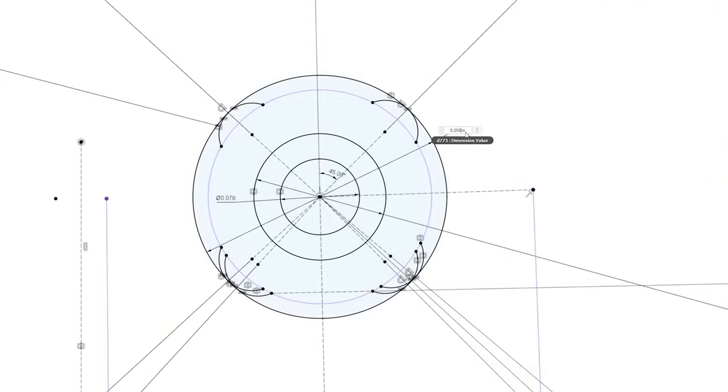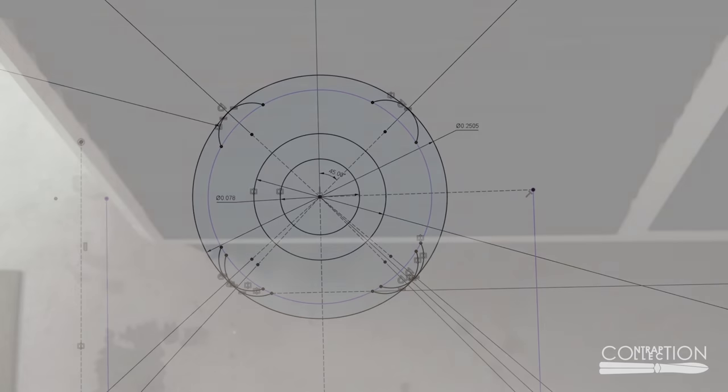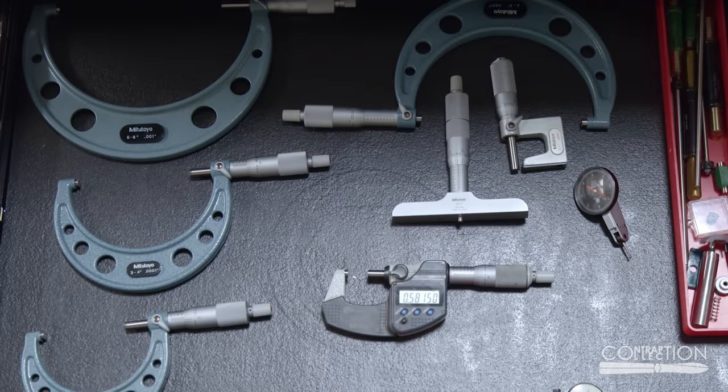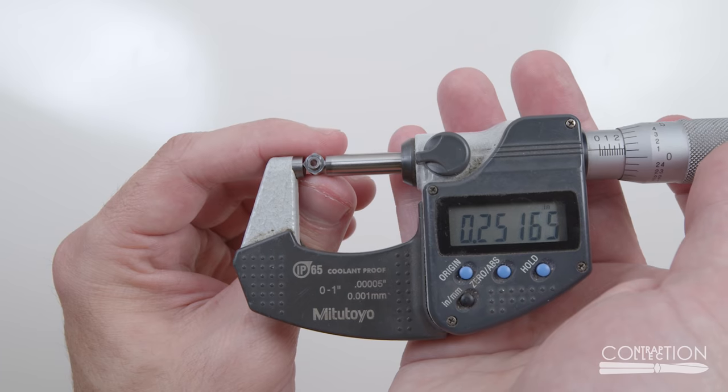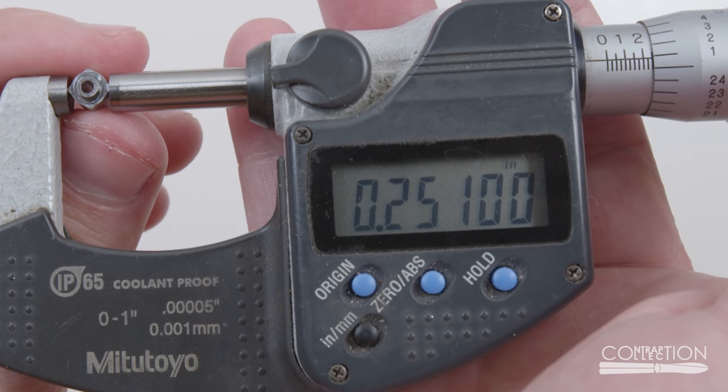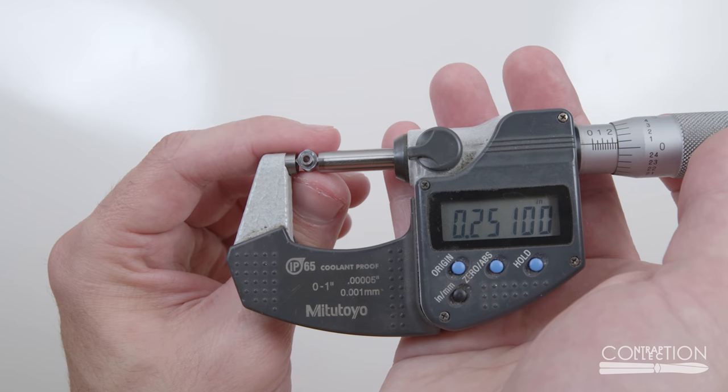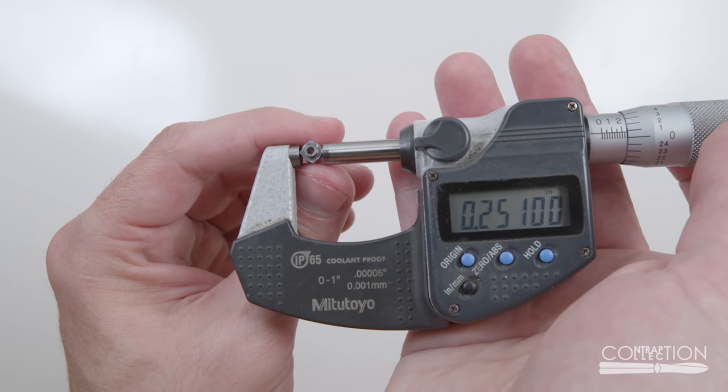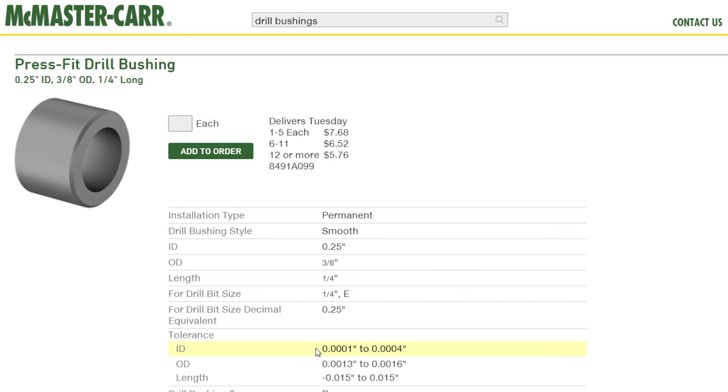I guess I should design things to the middle of this tolerance range? Maybe I should just measure my pins and see how much they're oversized. Oh, that's not between 0.25 and 0.251. It is 0.251. Whoops. I guess the tolerances of the bushings do matter.